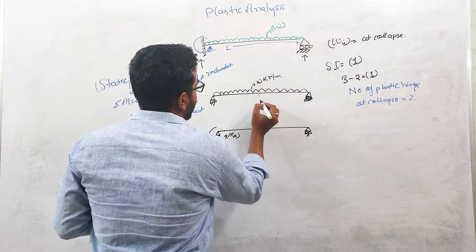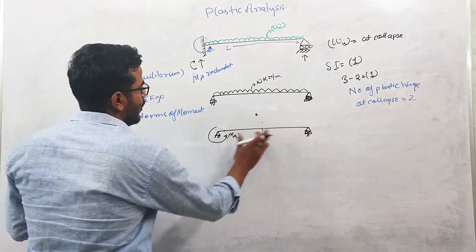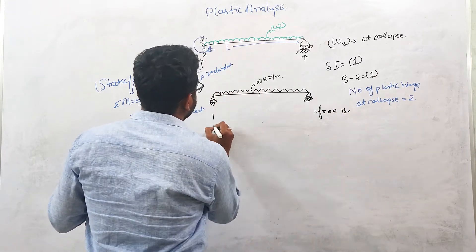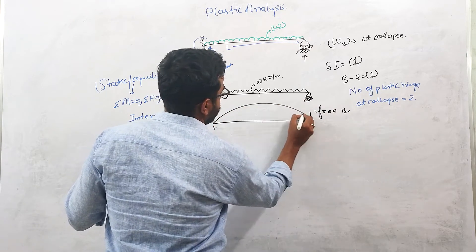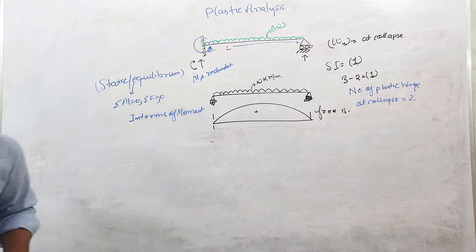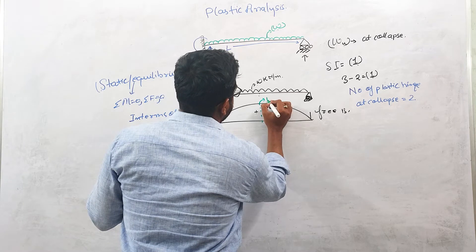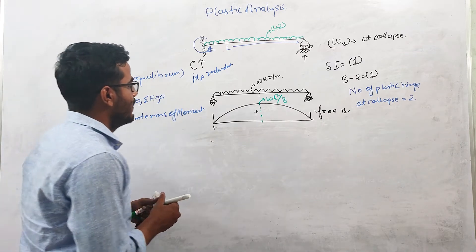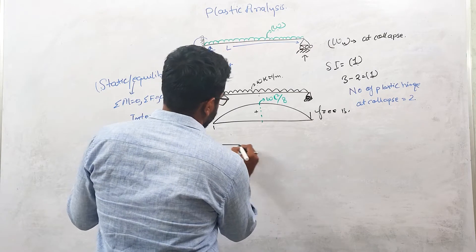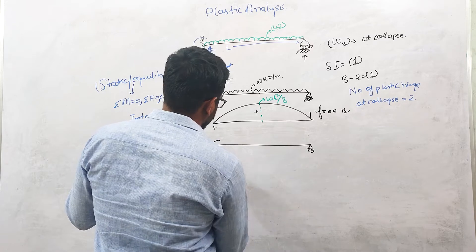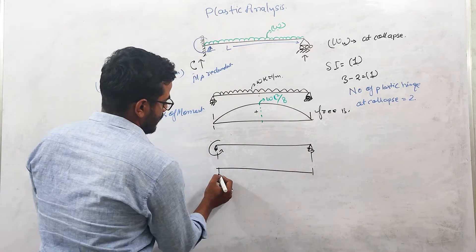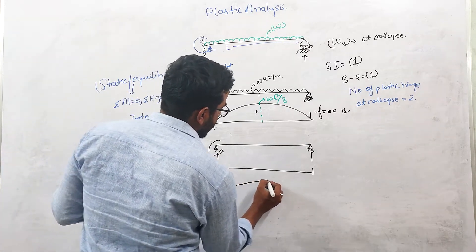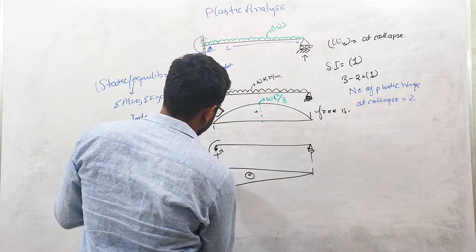If you draw the bending moment diagram of the simply supported beam (the free BMD), the maximum moment occurs at the center and its value is wL²/8. When we consider the redundant MA, the bending moment diagram due to MA starts from a negative value — because we consider clockwise as positive and MA is anticlockwise — and is zero at end B, with value MA at end A.